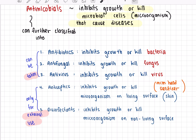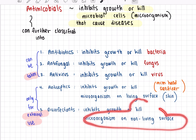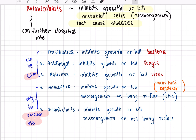Antiseptics kill microorganisms on a living surface — for example, hand sanitizers, which contain high amounts of alcohol. Disinfectants are used to kill microorganisms on non-living surfaces. Antifungal kills fungus, and antiviral kills viruses.